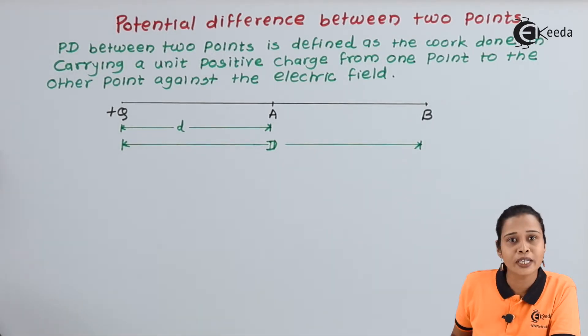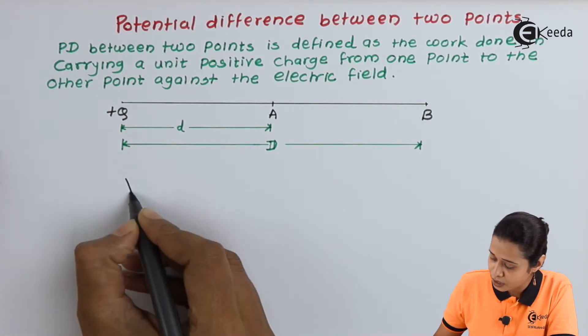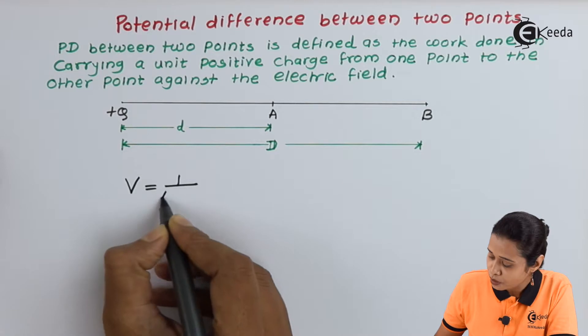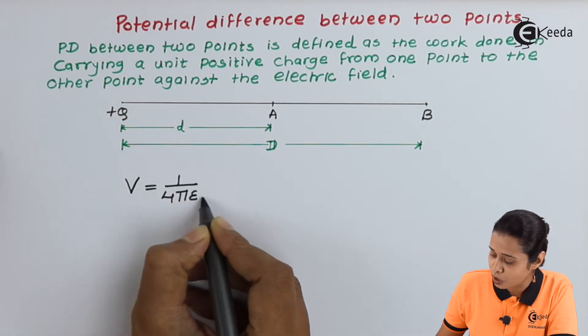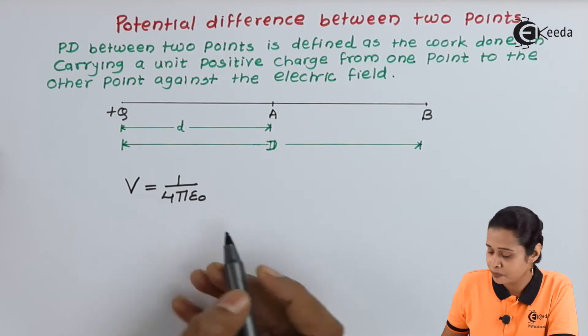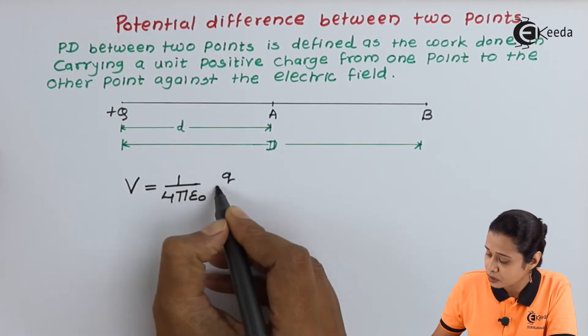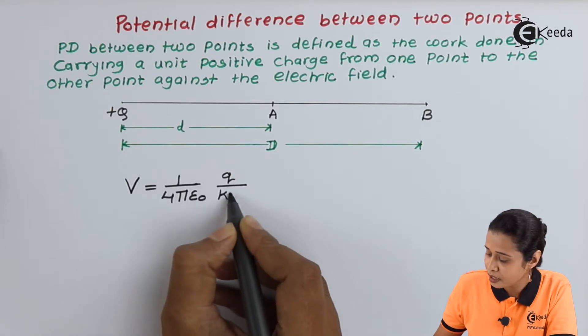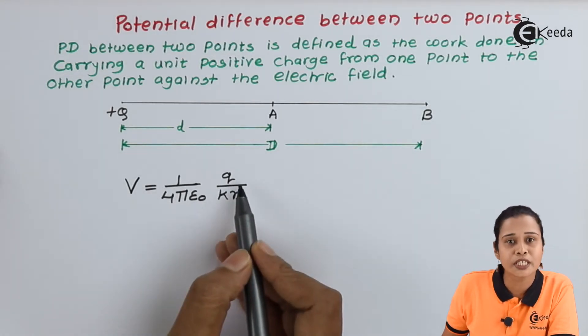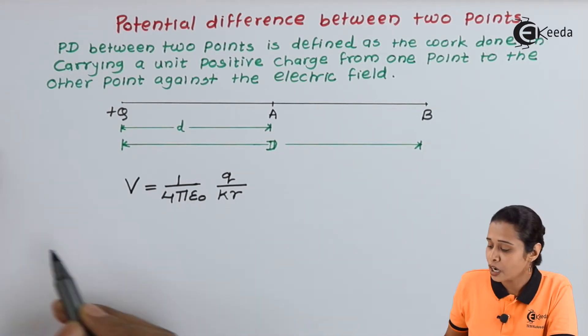Now we know the derivation for potential difference. So we have V equals 1 upon 4 pi epsilon naught, where epsilon naught is the permittivity of the medium, times Q upon K into R. Here Q is the charge, K is the dielectric constant, and R is the distance.